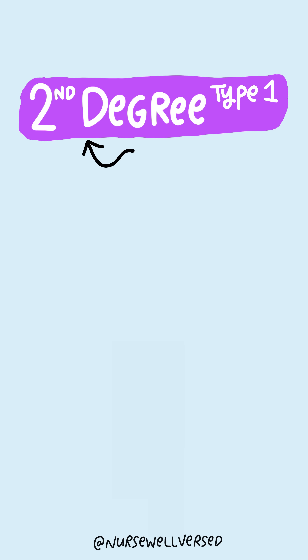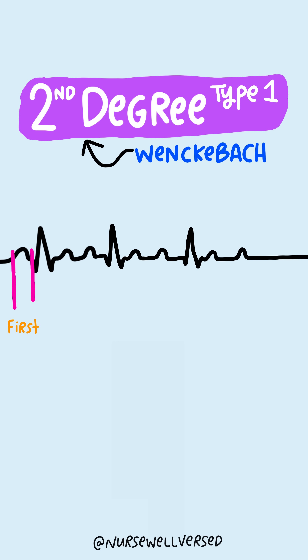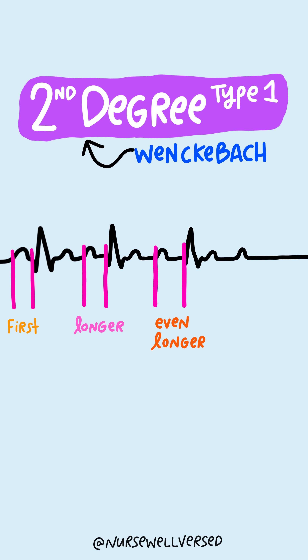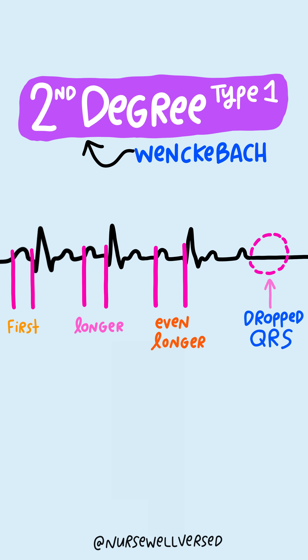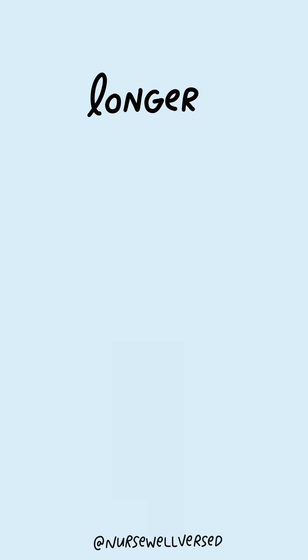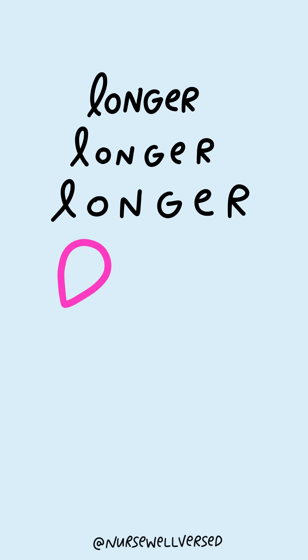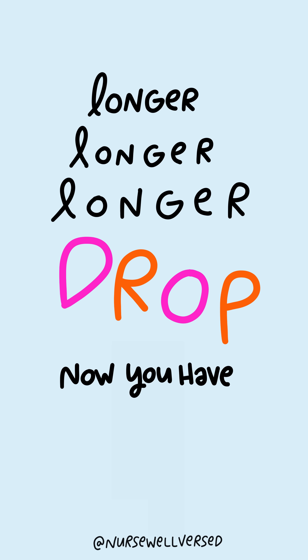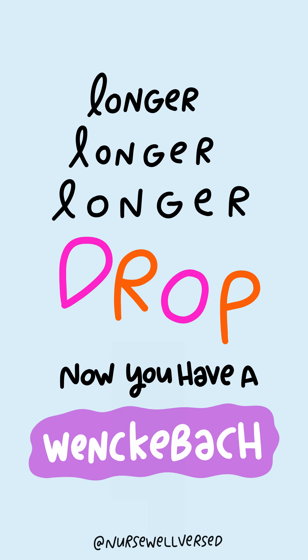A second degree type 1 heart block, also known as Wenckebach, occurs when the PR intervals gradually get longer and longer until eventually a QRS complex drops completely. A simple rhyme to remember this is: longer, longer, longer, drop — now you have a Wenckebach.